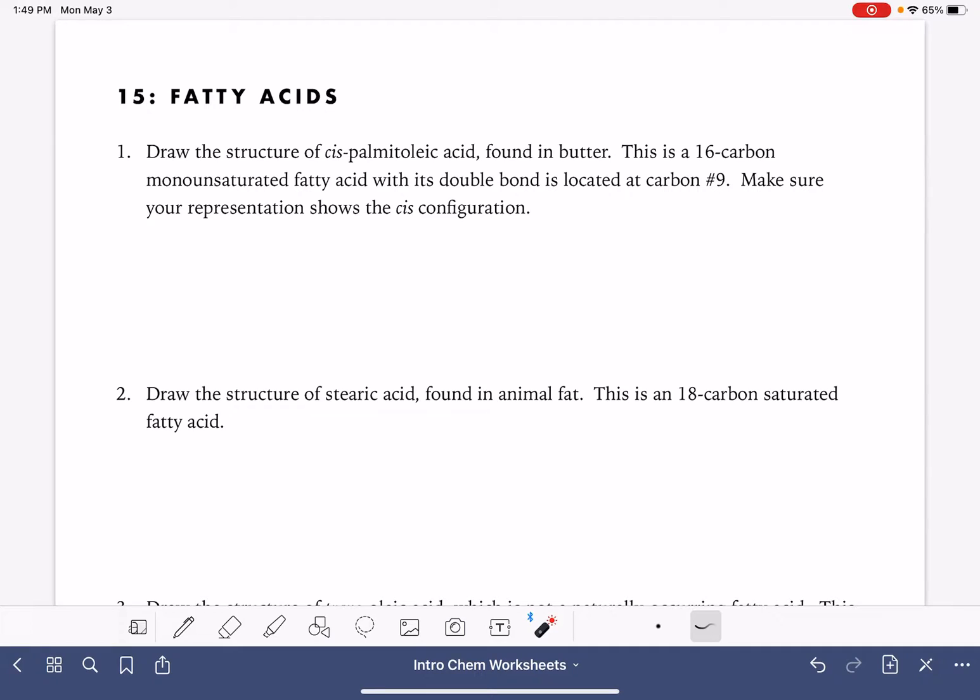The first fatty acid that we're drawing is cis-palmitoleic acid. It tells us that this is a 16-carbon monounsaturated fatty acid, meaning one carbon-carbon double bond, and the carbon-carbon double bond is located at carbon number nine. It does have the cis configuration of a double bond, which means that the two hydrogen atoms on the double bond are both located on the same side of the double bond.